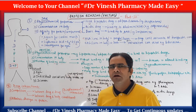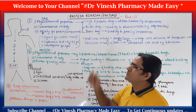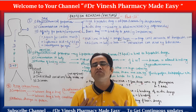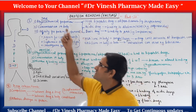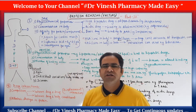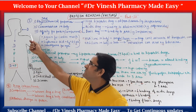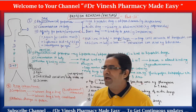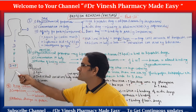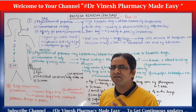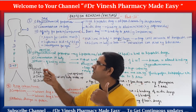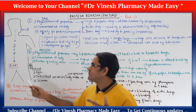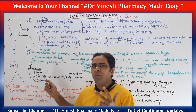Now, to understand or remember what the factors related to protein binding are, here is a diagram showing a patient taking drug D. The drug goes inside and forms a complex with proteins present in the blood. We will examine three things: factors related to the drug, factors related to the protein, and factors affecting the complex.